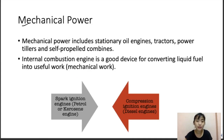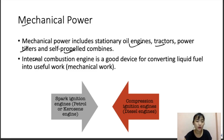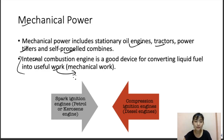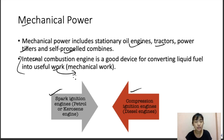Mechanical power includes stationary oil engines, tractors, power tillers, and self-propelled combines. The internal combustion engine is a device for converting liquid fuel into useful mechanical work. There are two types of engine: the spark ignition (SI) engine, where combustion takes place by a spark generated by the spark plug — petrol engines are an example.